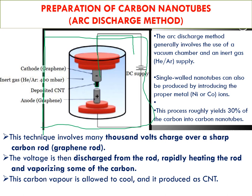The chamber is vacuumed, and helium and argon gas are passed at 400 millibars. Then a high voltage electricity is supplied, giving electrons to the carbon rods. Because of this electrical energy, the carbon bonds become activated.